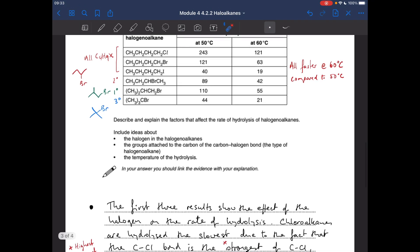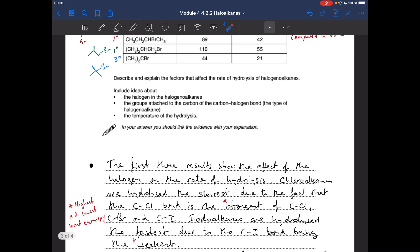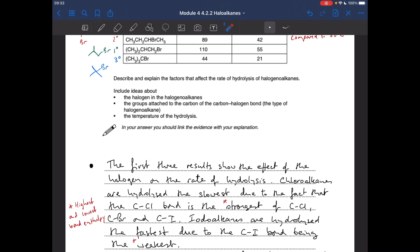So my answer for that little bit there is here. So I'm saying the first three results show the effect of the halogen on the rate of the hydrolysis. Chloroalkanes are hydrolyzed the slowest due to the fact that the C-Cl bond is the strongest, or you could say has the highest bond enthalpy. And then I've given the other extreme - the iodoalkanes are hydrolyzed the fastest due to the fact that the C-I bond is the weakest, or you could say has the lowest bond enthalpy.